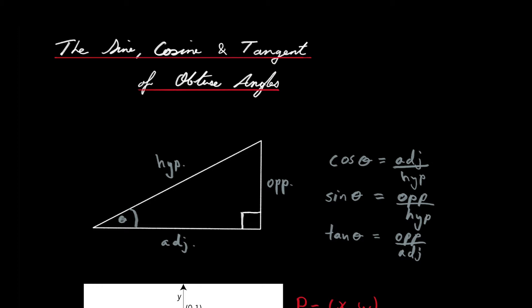It turns out that extending the definition of sine, cosine, and tangent so that we can take the sine, cosine, and tangent of obtuse angles really just implicitly follows from some of the work we've done in previous videos on the unit circle. I wanted to explicitly cover it because in upcoming videos I'm going to discuss the sine rule and the cosine rule, also known as the law of sines and the law of cosines. Those formulas are useful for working with triangles that are not right-angled triangles, so some of those triangles are going to contain obtuse angles.